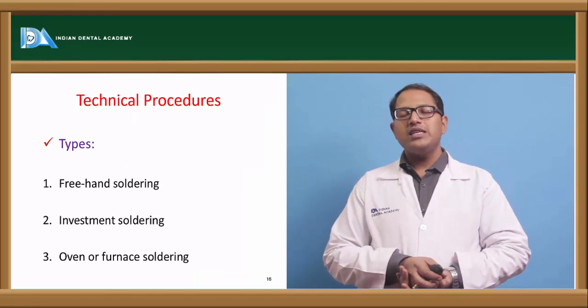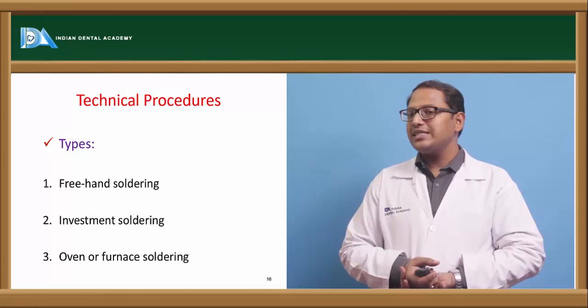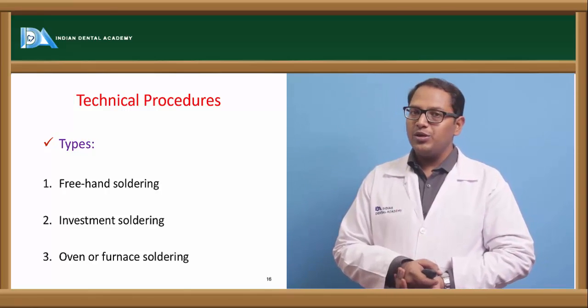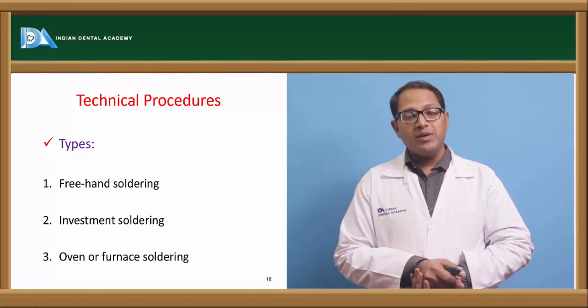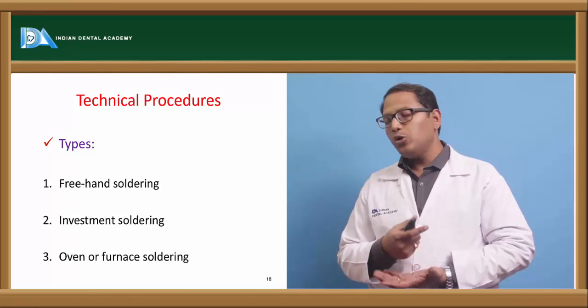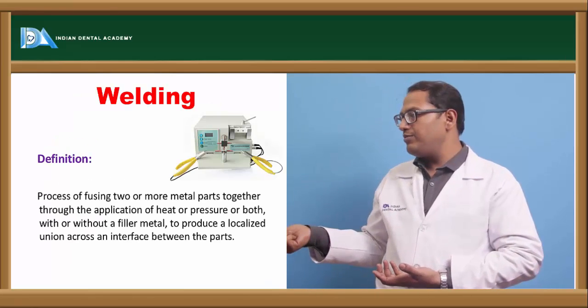So the technical procedure, what can be the different types of techniques. It can be freehand soldering like we do it in ortho cases. It can be investment soldering, it can be done after the failure of investment. It can be an oven or a furnace soldering for the bigger material.